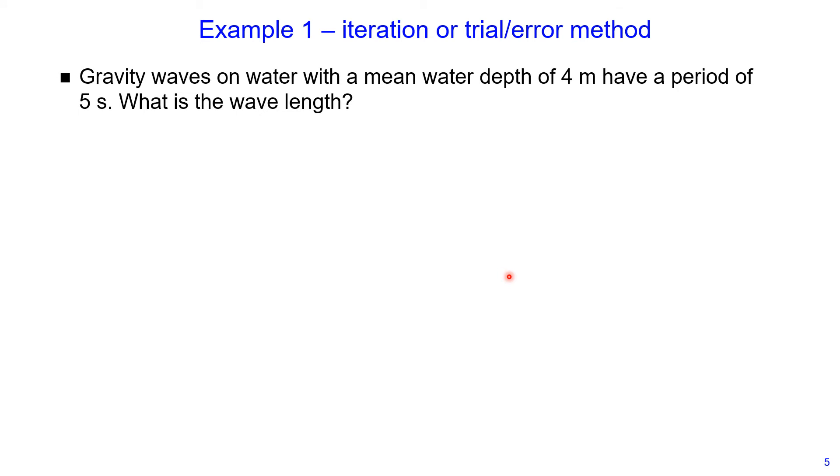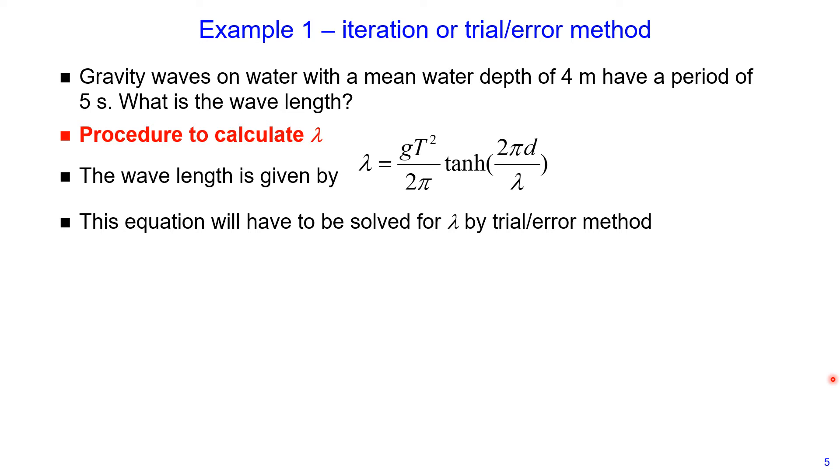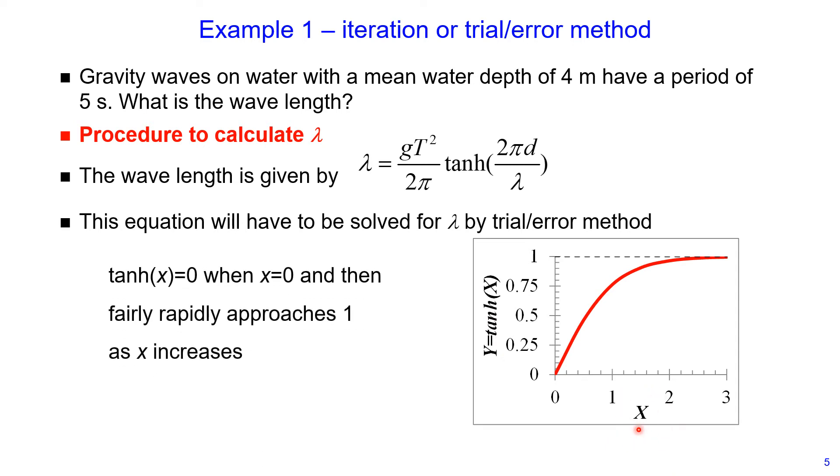So how can we use iteration method or trial and error method manually? Our procedure would be as follows. We know that we need to use the full equation where lambda is on both sides of this equation. So let's use trial and error method. If I plot a graph that shows dependence of function y, which is hyperbolic tangent of x and how it depends on x, you can see that hyperbolic tangent of x would be equal to 0 when x is equal to 0.